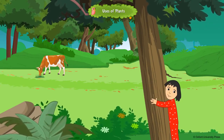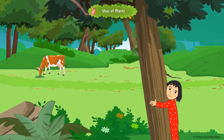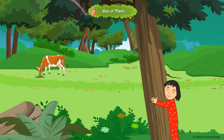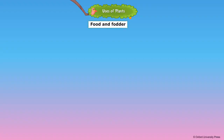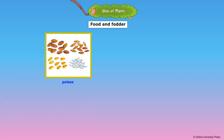We get cereals, food items, timber, medicines, paper, rubber, resin, and gum from trees. Plants provide food for human beings and fodder for animals. Plants give us our staple grains rice and wheat, and also pulses and oil seeds.